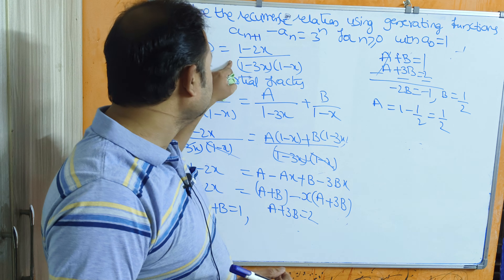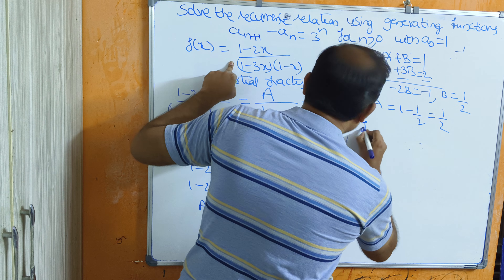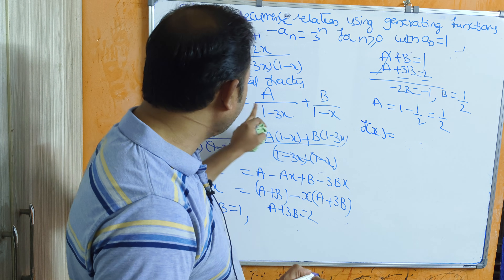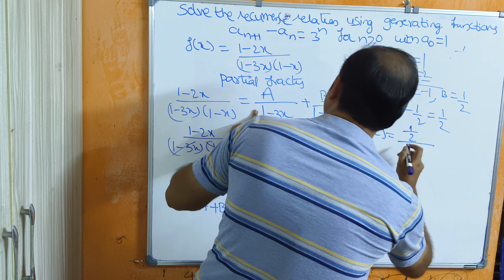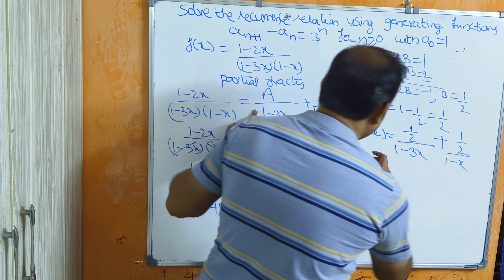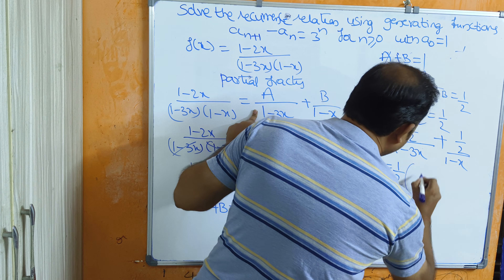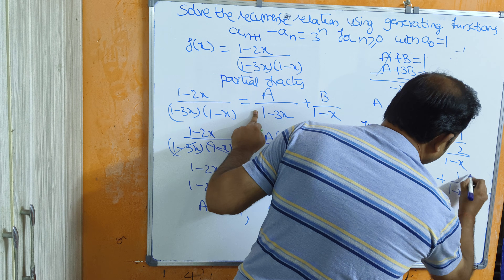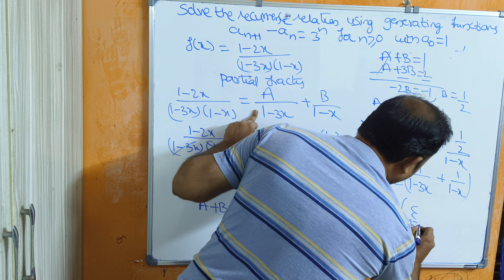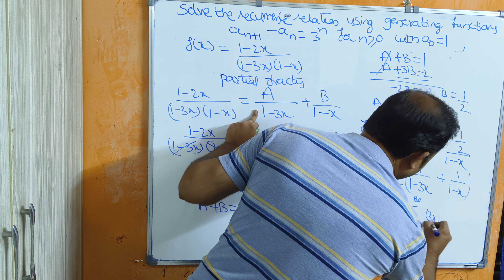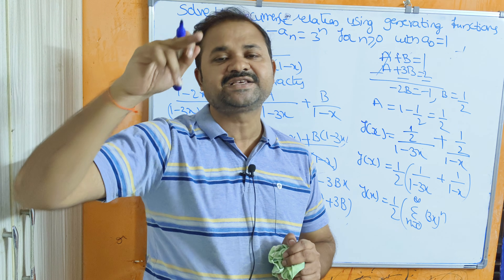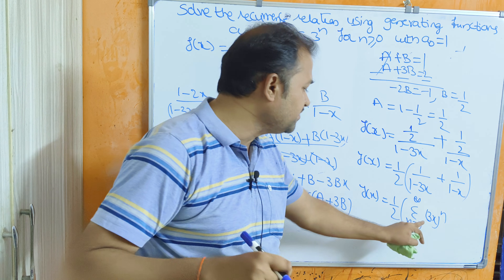Substituting A equal to 1/2 and B equal to 1/2 into the partial fraction equation, f(x) equals (1/2) divided by (1-3x) plus (1/2) divided by (1-x). We can factor out 1/2, giving f(x) equal to (1/2) times the quantity [1/(1-3x) plus 1/(1-x)]. Using the formula 1/(1-3x) equals sigma n=0 to infinity (3x)^n, and 1/(1-x) equals sigma n=0 to infinity x^n.